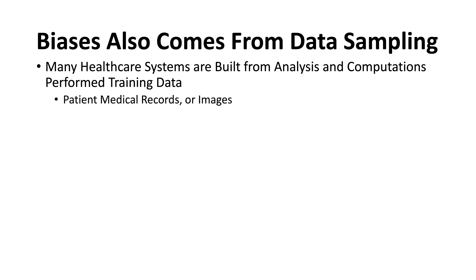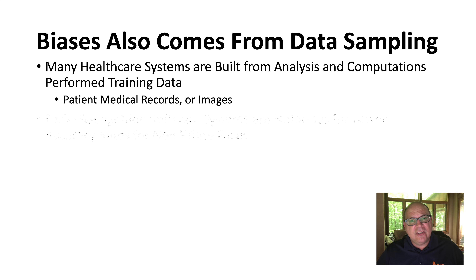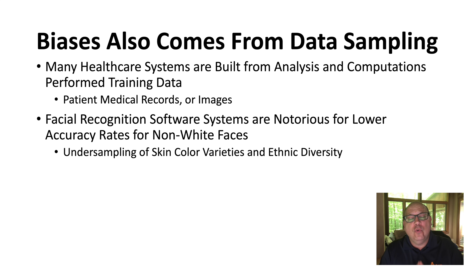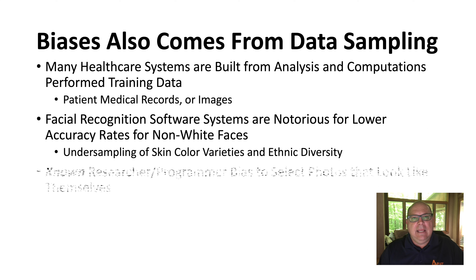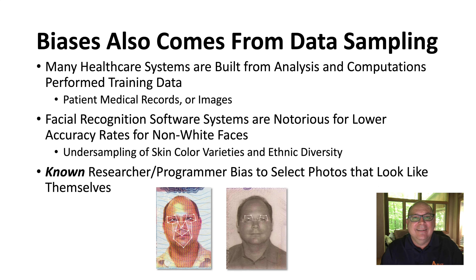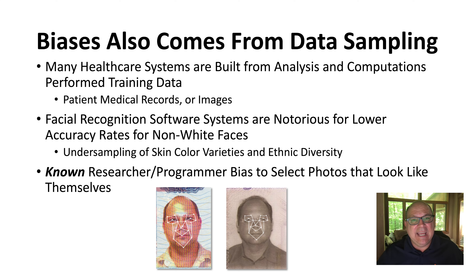Biases also come from data sampling. Facial recognition software, for example, is notorious for having a bias against non-white-skinned subjects. It turns out that software developers were picking photos to train the systems that looked more like them rather than others. So the bias was against those who aren't software developers, who happen to be mostly white males.